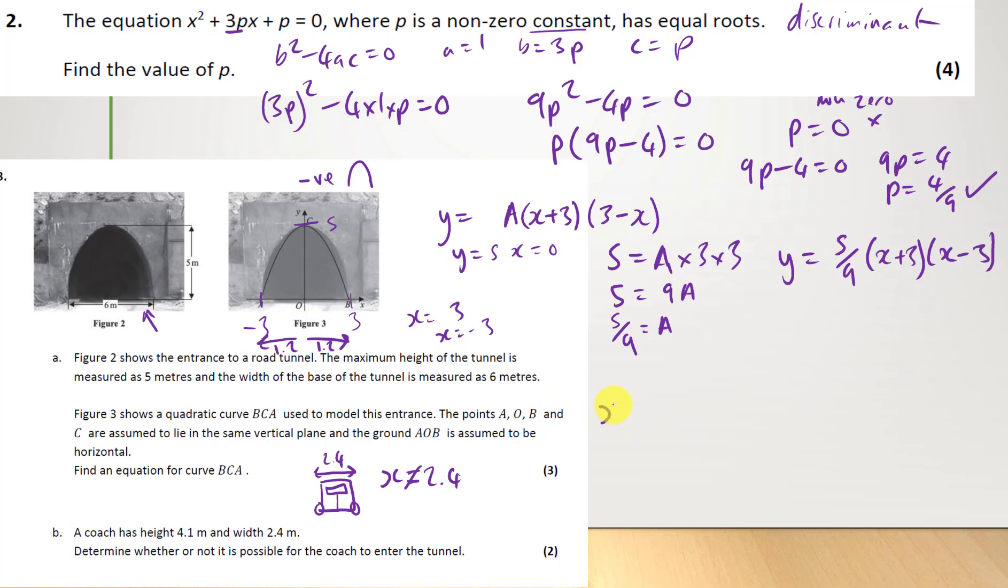So, we're going to use x equals 2.4 over 2, which is 1.2 into our y equals 5 over 9 (9 - 1.2²). And that equals 4.2. And so, that's the height. So, that means the height of the tunnel at x equals 1.2 here. Or minus 1.2 here. Because the whole coach is 2.4.